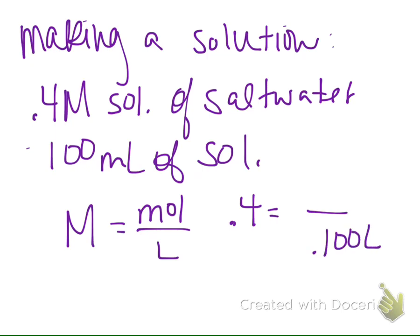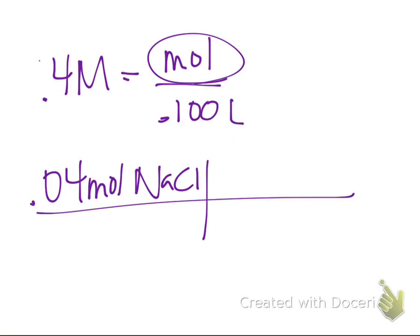0.100 liters. We found our moles of sodium chloride. We're going to go from moles to grams. This is just to tell me how many grams go into my solution — this is for me to physically be able to measure this out. I need this many grams.